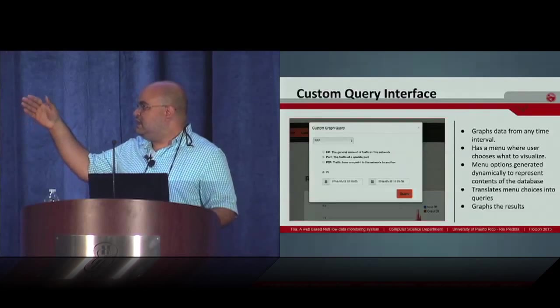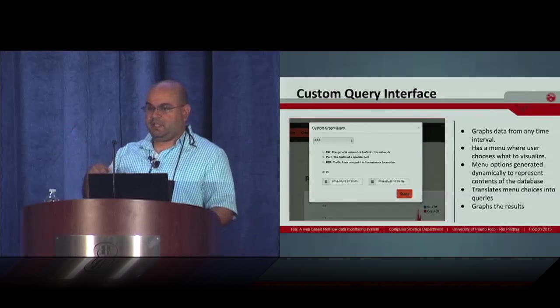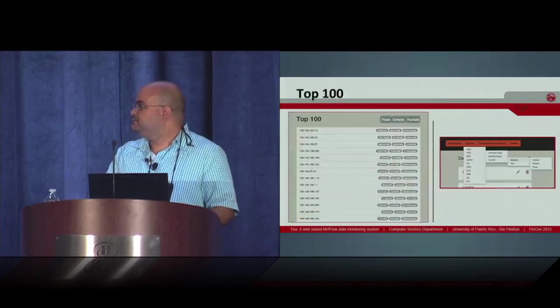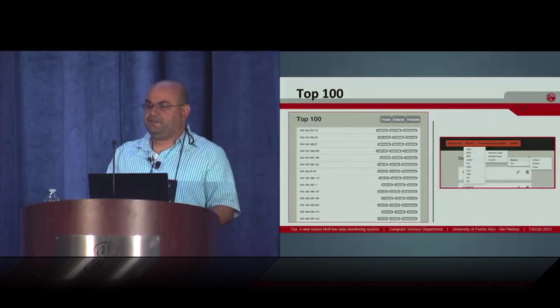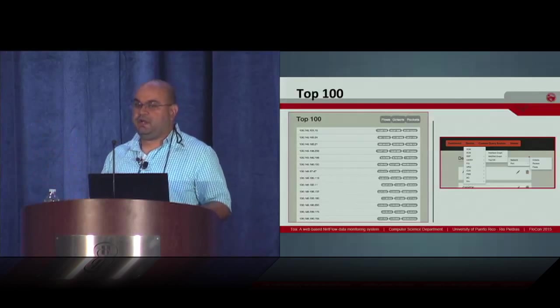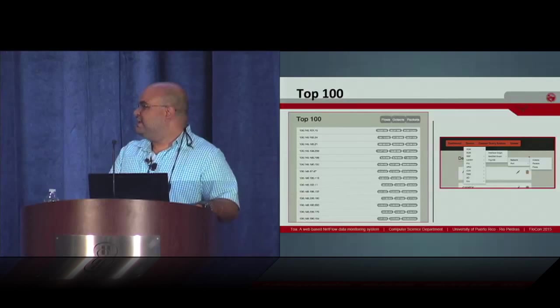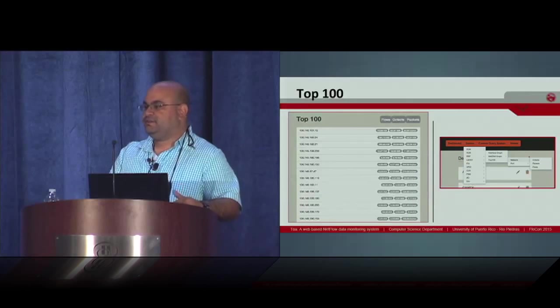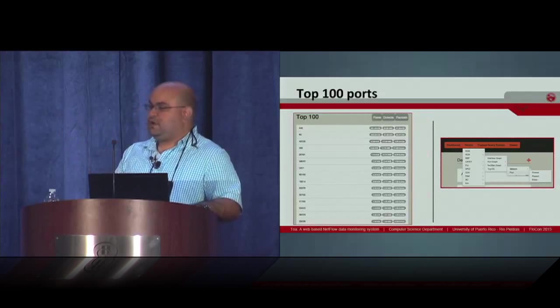This is an example of the result of a query. The user just has to select what he wants to generate, and the query is translated to a query of the database. We also include the top 100 feature that will give you the top 100 IPs in your flow data, which is really useful to detect computers that are compromised or behaving abnormally.